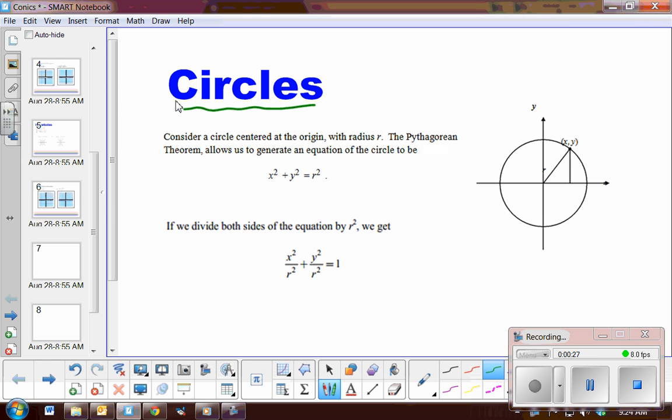First thing, let's look at our best friend circles. I say best friend because they're like the foundation of conics and they're pretty straightforward. For example, if we consider a circle centered at the origin (0,0) with radius r that stays constant, using Pythagorean theorem, we develop the equation x² + y² = r². Another common way of writing the equation is when we divide each term by r² and get x²/r² + y²/r² = 1.